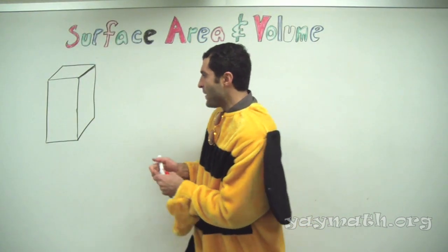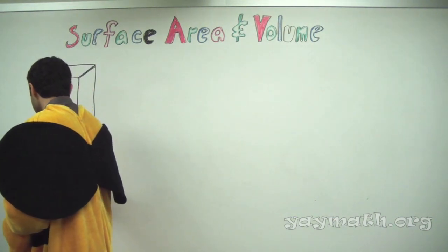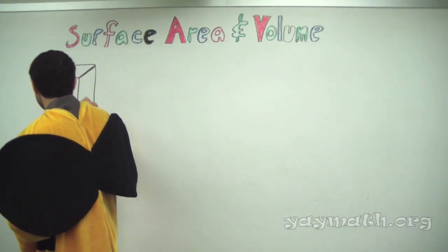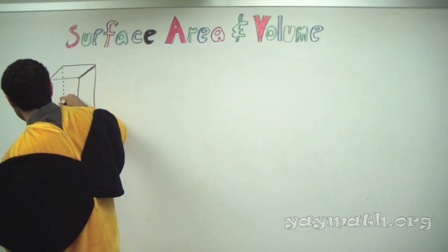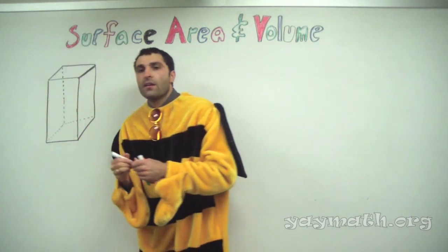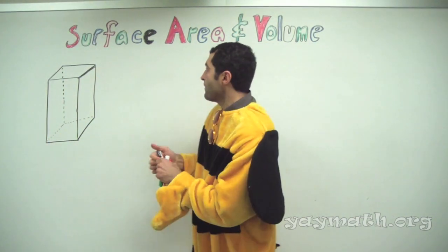And now we have the back lines dotted for perspective. Coming down — okay, now we're going to do the volume.